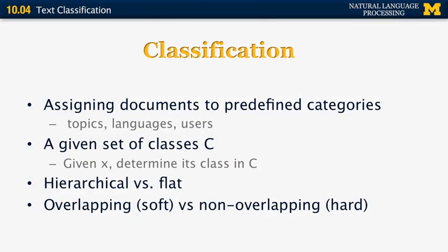You can also distinguish between overlapping and non-overlapping classification. In overlapping classification, also known as soft classification, each document can be classified in multiple classes. For example, a document about the business of sports may be classified under both business and sports. In non-overlapping classification, you make a hard decision and classify each document in exactly one class.